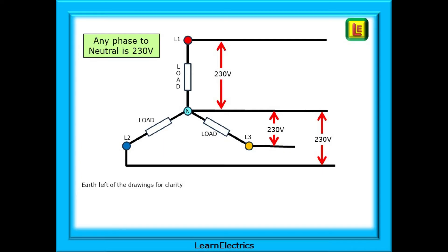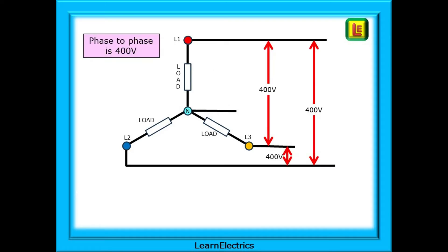A reminder then of the voltages available at a three-phase distribution board. Any phase to neutral is 230 volts nominal. Taking a phase from a breaker plus a neutral plus an earth will give you a single phase supply for a circuit, and any phase measured to earth or CPC is also 230 volts. If we measure phase to phase we will have 400 volts. L1 to L2, L1 to L3, and L2 to L3 will all be 400 volts.